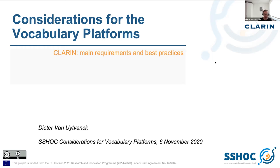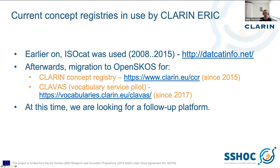So first, a bit of history. We've been using all kinds of concept registries already for quite a while, and I saw that many of the people today in the online meeting have also actually contributed to the creation of some of these platforms. In 2008, we started with a platform called ISOCAT for the registration of data categories. This platform was running until 2015. There were over a thousand entries in there, many of them translated, with a lot of effort put into creating these translations, the definitions, and having a whole organizational framework around it, including a kind of ISO stamp of approval on certain groups of concepts.